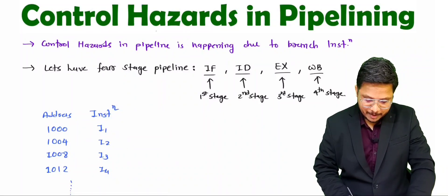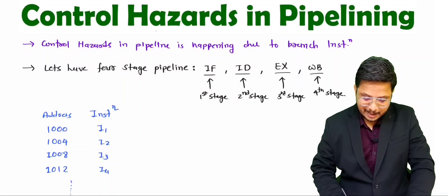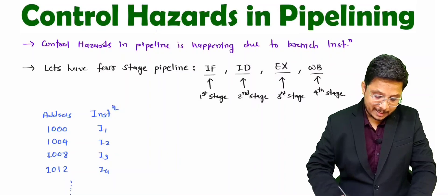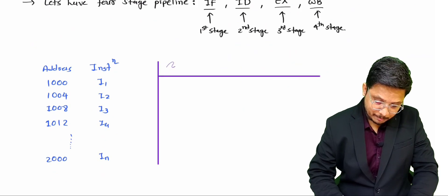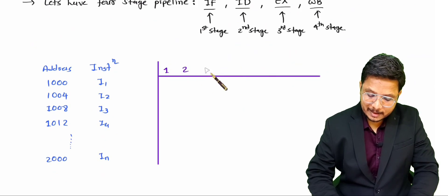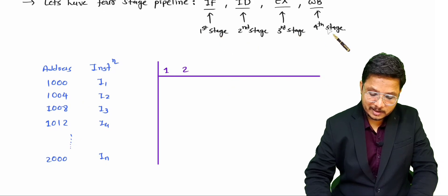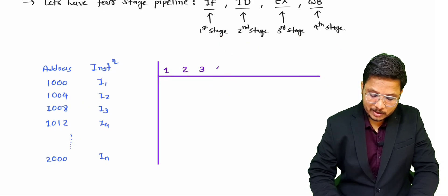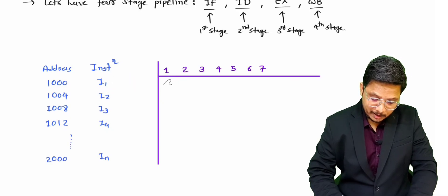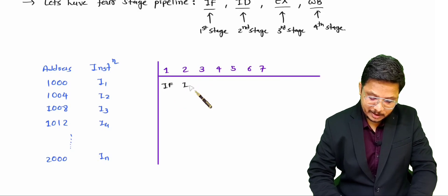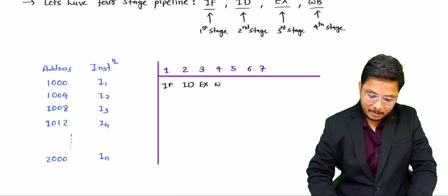Let us say we also have address 2000, and at that address let us say an IN instruction is there. In pipelining, all stages execute with respect to time cycles. The first instruction performs Instruction Fetch during the first cycle, Instruction Decode during the second cycle, Execute during the third cycle, and Write Back during the fourth cycle.